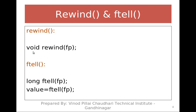Now comes rewind. Rewind takes only a single argument — the file pointer. You just specify the file pointer and it will take you back to the first position. ftell returns a long value — specifically, how many bytes you have already jumped, i.e., the current location from the starting point to where you are standing.